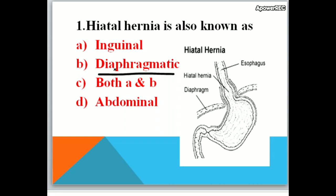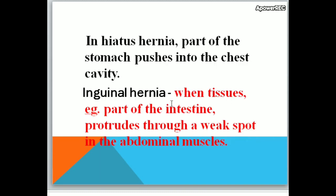Hiatal hernia is also known as diaphragmatic hernia. It is called diaphragmatic hernia because in hiatal hernia, the part of the stomach pushes up through the diaphragm into the chest cavity. Inguinal hernia is when tissues — for example, part of the intestine — protrudes through a weak spot in the abdominal muscles.